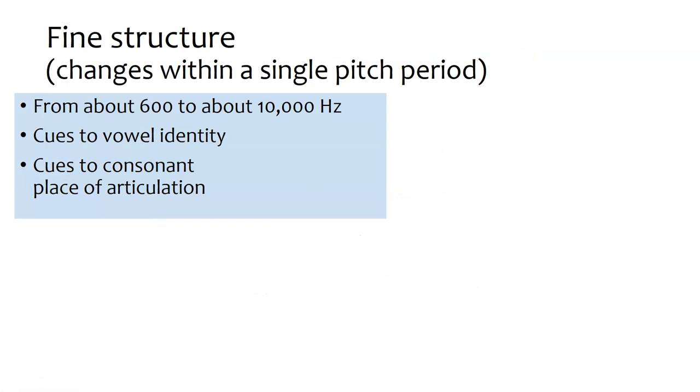So the final thing to go over here is fine structure. There's not as much that we'll say about this because this is really getting into the real nitty-gritty details of speech. And we tend to think about these high-frequency cues as being something we look at on a spectrum or a spectrogram. But still, we want to learn what we look for in the signal in the fine structure and how it could be relevant. So specifically, when we think about things between 600 and 10,000 hertz, we're thinking about cues to what vowel it is that you're hearing, what is the vowel identity, and also what is the consonant place of articulation.